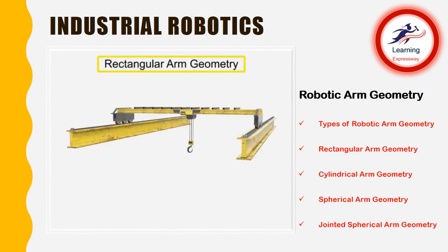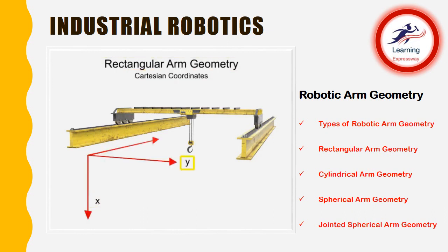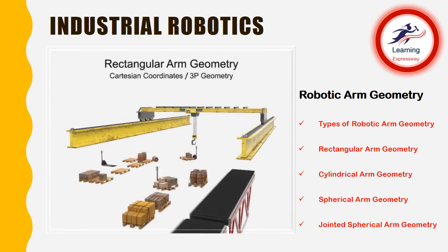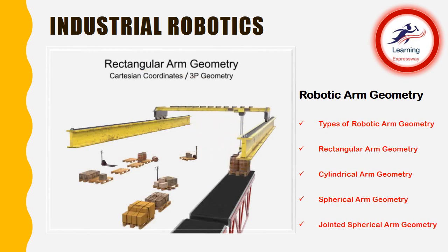Robots with rectangular arm geometry use Cartesian coordinates and move linearly along each of the X, Y, and Z axes. This type of movement is also called 3P geometry, where the P stands for prismatic or linear motion. This type of geometry is most commonly used with pick-and-place or large overhead-mounted robots.